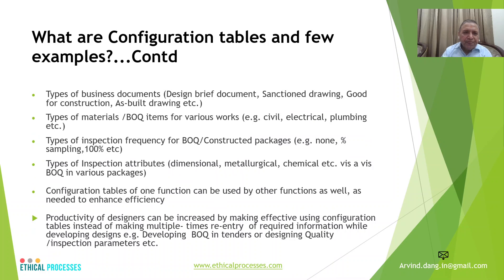Other examples include type of business documents, such as a design brief document, sanction drawings, GFC (Good for Construction) drawings, or as-built drawings. Also, type of materials in BOQs — civil, electrical, plumbing, and so on. Another configuration table can be for the type of inspection frequency for doing the quality check of BOQs or the completed building, such as nil, direct online, or sampling like 5%, 10%, or 100% inspection. Another table can cover type of inspection attributes, like dimensional, liturgical, or chemical.